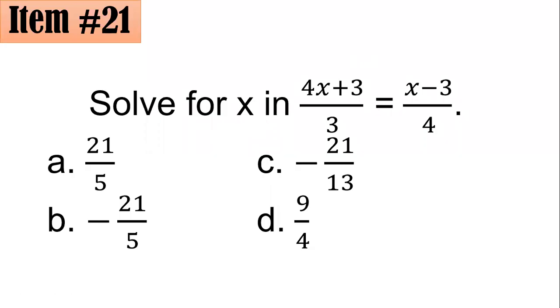Number 21. Solve for x: (4x + 3)/3 = (x - 3)/4. Did you go for A, B, C, or D?